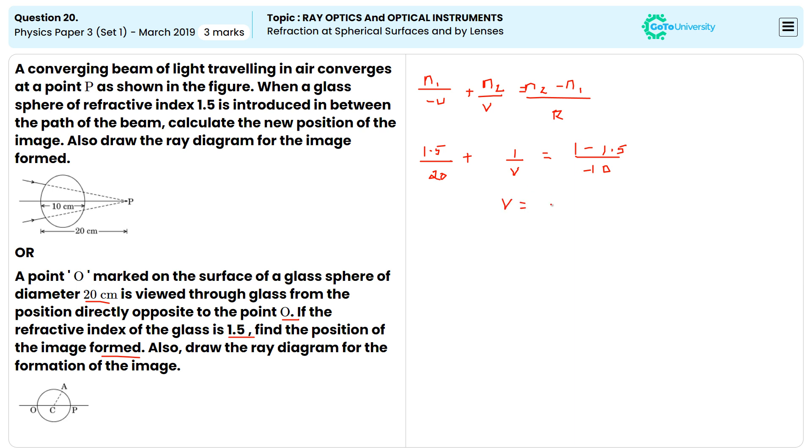V equals minus 40 centimeters. And the ray diagram for the formation of the image is like this. This is the ray diagram of the formation of the image. Bye.